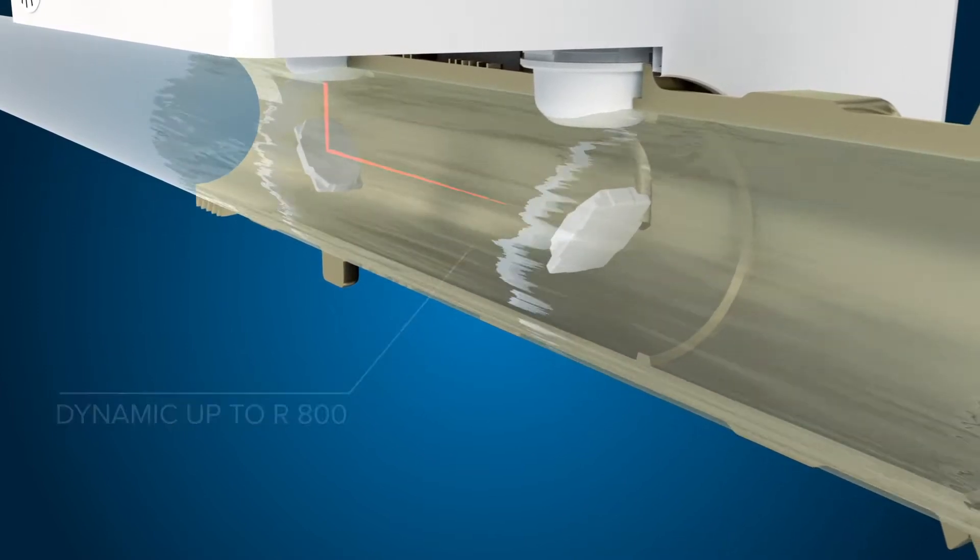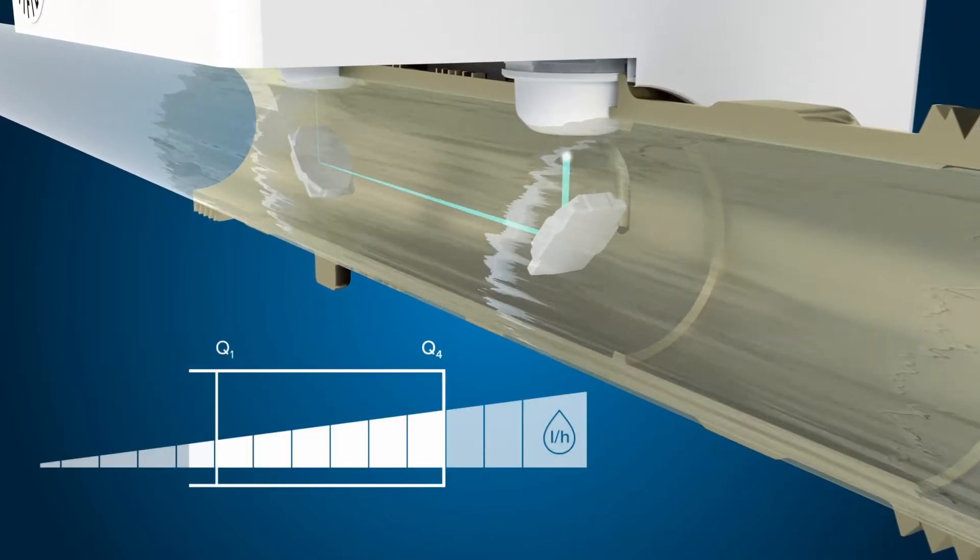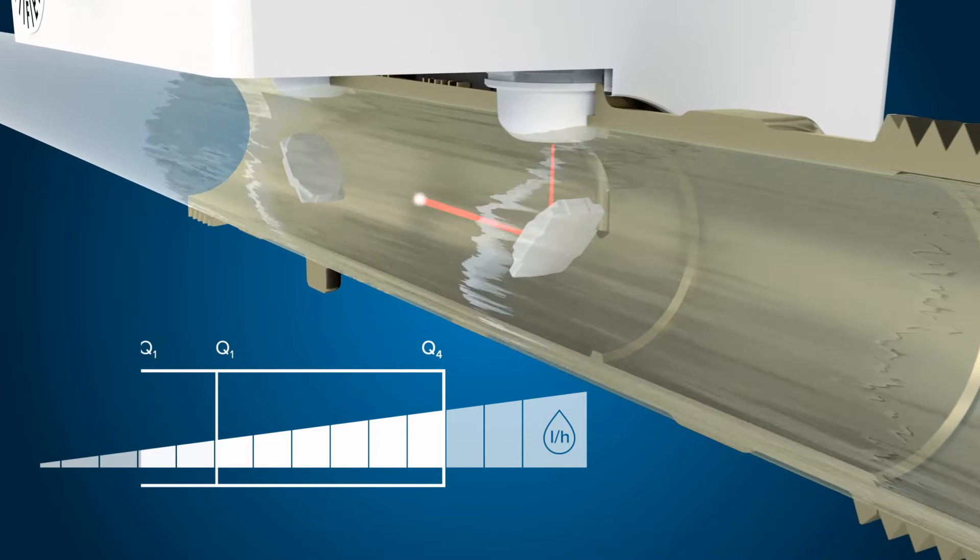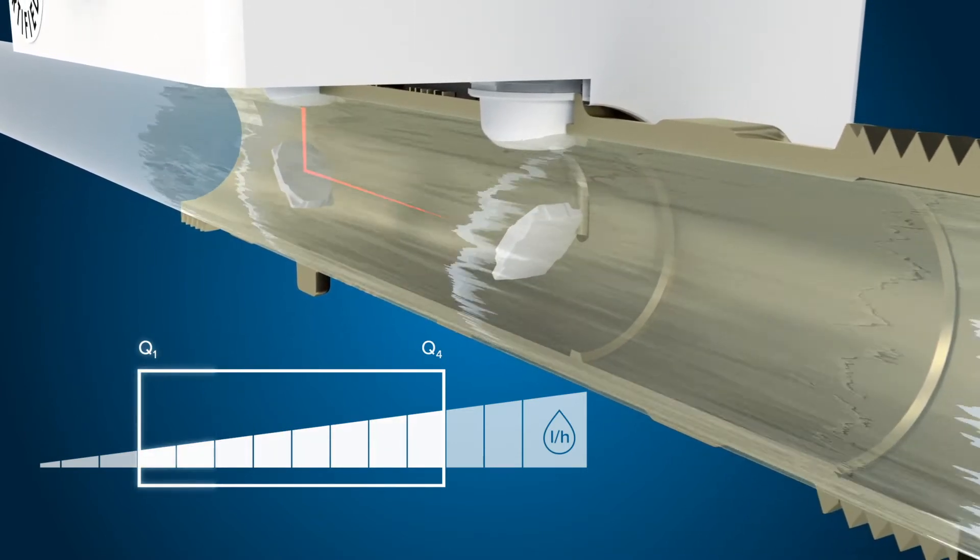With dynamic up to R800, Hydrus II extends the spectrum of measured water flows relevant in practice and provides the lowest approved minimum flow rate.